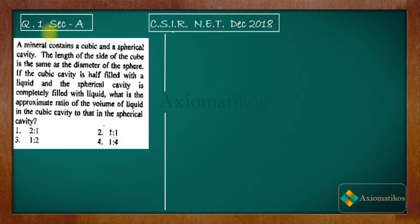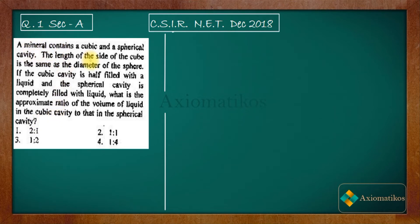Let us have a look. A mineral contains a cubic and a spherical cavity. The length of the side of the cube is the same as the diameter of the sphere. If the cubic cavity is half-filled with liquid and the spherical cavity is completely filled with liquid, what is the approximate ratio of the volume of liquid in the cubic cavity to that in the spherical cavity?